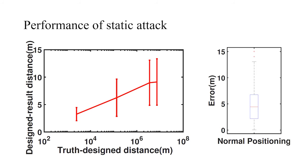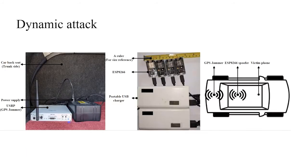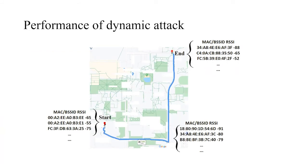Here is the setup for dynamic attack. As we can see, we put the jammer and the ESP8266 spoofer in the car, and the victim phone will receive those signals from the spoofer. We choose a route that drives about five minutes, and the route is shown here.